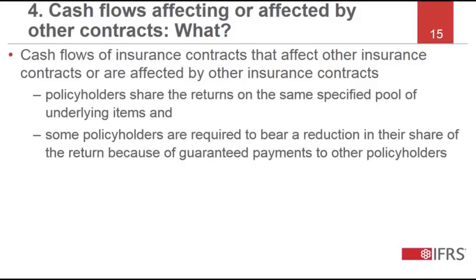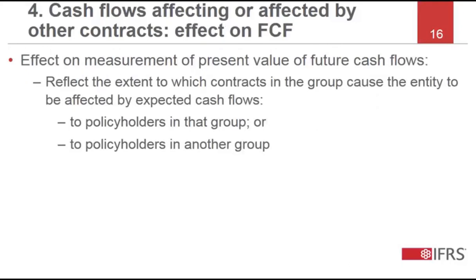Sometimes this effect happens between contracts in different groups. When this occurs, IFRS 17 specifies how it affects the determination of the fulfilment cash flows of the groups. The measurement of the present value of future cash flows should reflect the extent to which contracts in the group cause the entity to be affected by expected cash flows to policyholders in that group or to policyholders in another group.